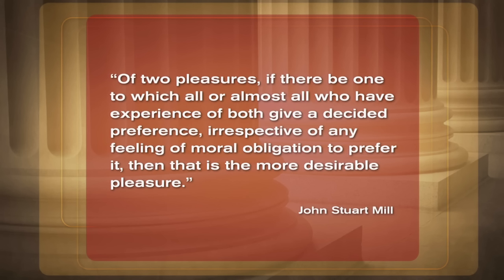How, according to Mill, can a utilitarian distinguish qualitatively higher pleasures from lesser, base, or unworthy ones? A student answers: if you've tried both of them, you'll prefer the higher one naturally, always. That's right, the professor confirms. Mill says: since we can't step outside actual desires without violating utilitarian premises, the only test of whether a pleasure is higher or lower is whether someone who has experienced both would prefer it. Of two pleasures, if there be one to which all, or almost all who have experience of both, give a decided preference, irrespective of any feeling of moral obligation to prefer it—then that is the more desirable pleasure.